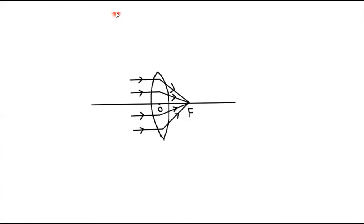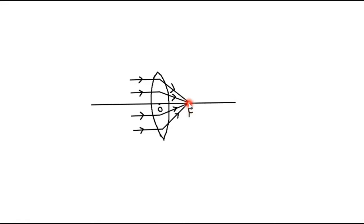This can be shown by the ray diagram. This is the convex lens. The object, which is the sun, is at infinity — very, very far away. So the incident rays from the sun which are coming are parallel to each other, and we know that the convex lens converges all these rays to the focus. So all the rays are converged at the point of focus. The bright spot of the sun can be seen at this focus, and this distance between the optical center and the focus we call the focal length.